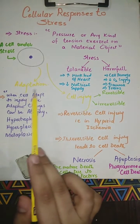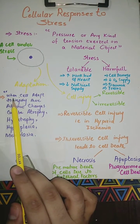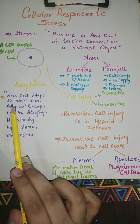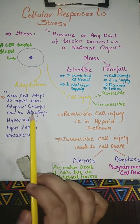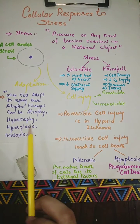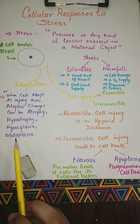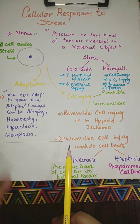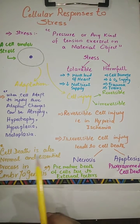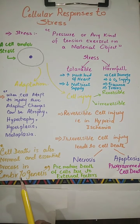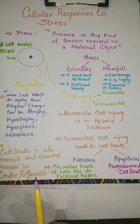Adaptations taken by the cell when cells adapt to injury include atrophy, hypertrophy, hyperplasia, and metaplasia. Cell death is also a normal and essential process during embryogenesis — that is, during the growth of the baby.